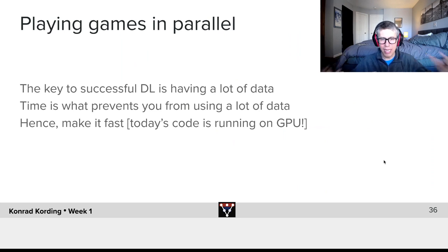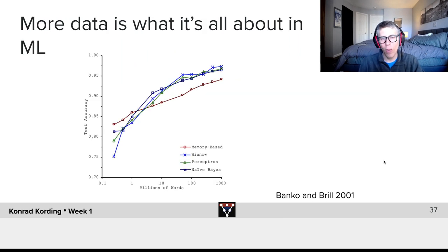Basically, in deep learning, we are often working to make things fast, primarily. Why is more data so important? Here's a great analysis from a very old paper, Banco and Braille 2001, where they worked on a text case and varied the amount of data that's available and the different algorithms that are there, and then they plotted test accuracy.